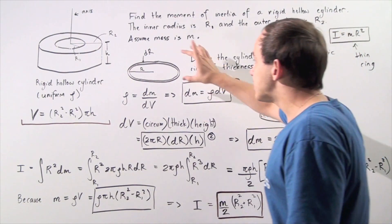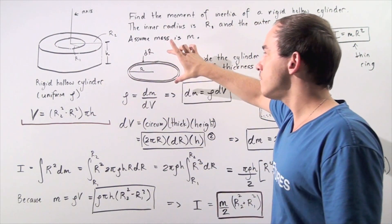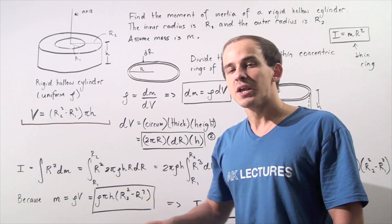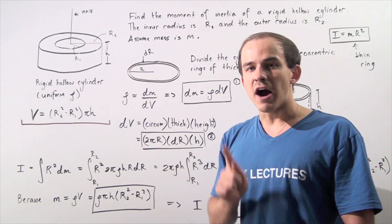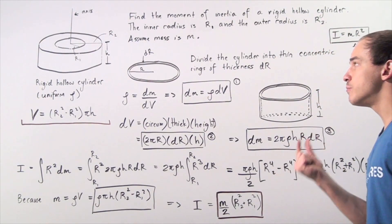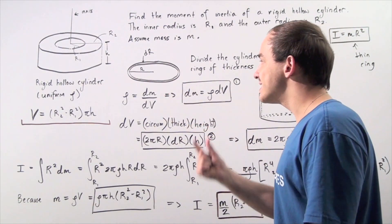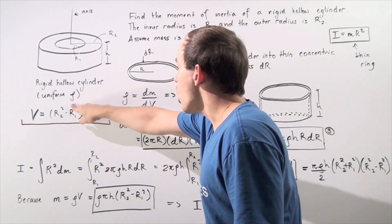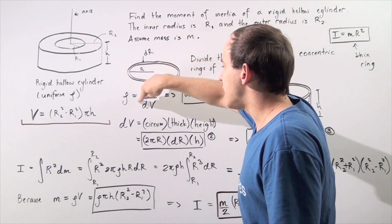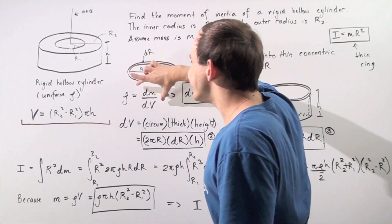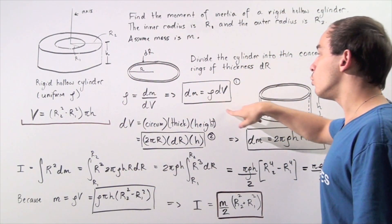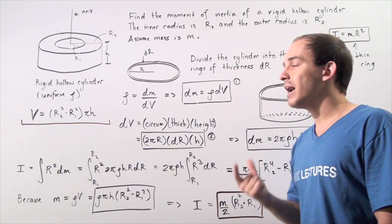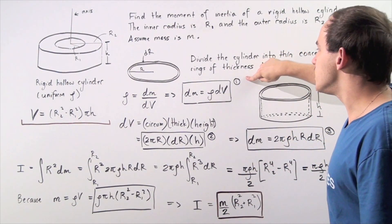Let's begin by calculating the density of one such ring. Recall that density equals mass divided by volume. Because we're dealing with an infinitely small thickness, both the mass and volume are infinitely small. So our density rho equals dm divided by dV. Rearranging, we get: dm = ρ·dV. Let's call this equation 1.